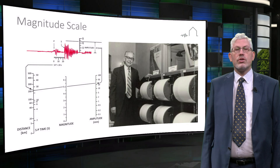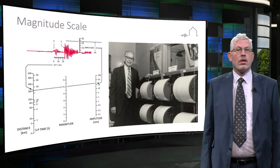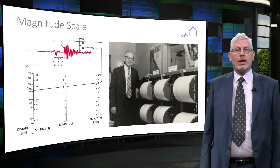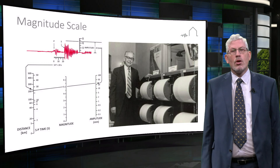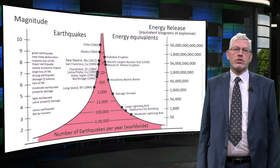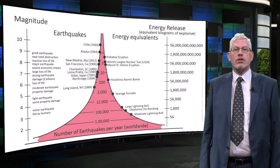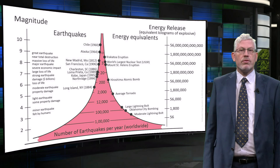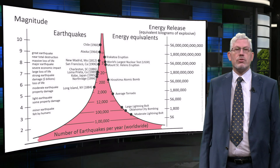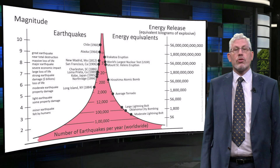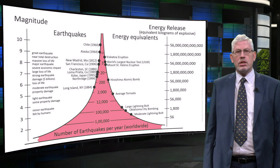The magnitude of an earthquake is determined from the logarithm of the recorded amplitude of the waves. Seismologists now use the moment magnitude scale in preference to the Richter scale. Because of the logarithmic basis of the scale, each whole number increase in magnitude represents a tenfold increase in the measured amplitude. In terms of energy, each whole number step in the magnitude scale corresponds to a release of about 32 times more energy than the amount associated with the preceding whole number value.